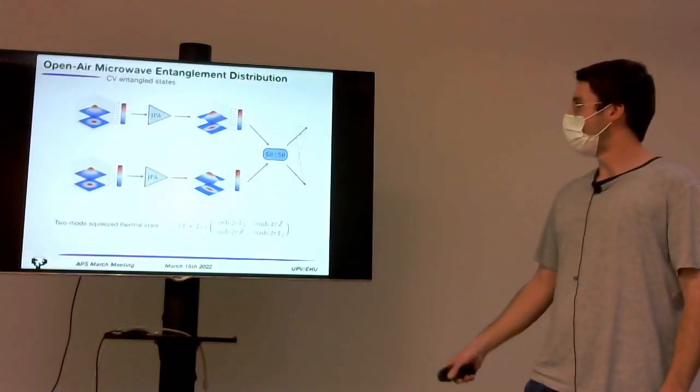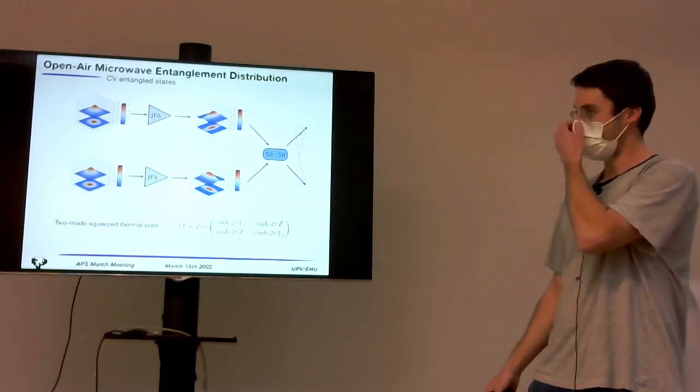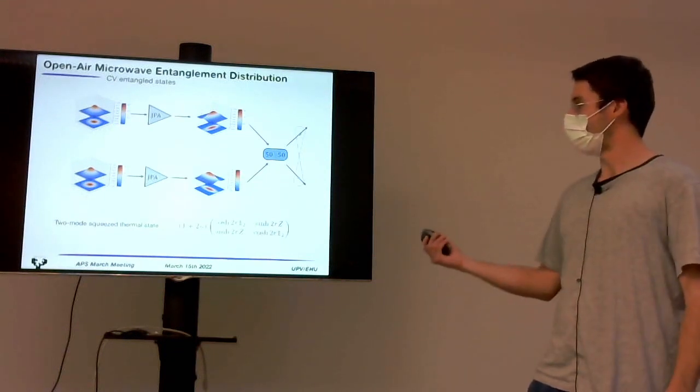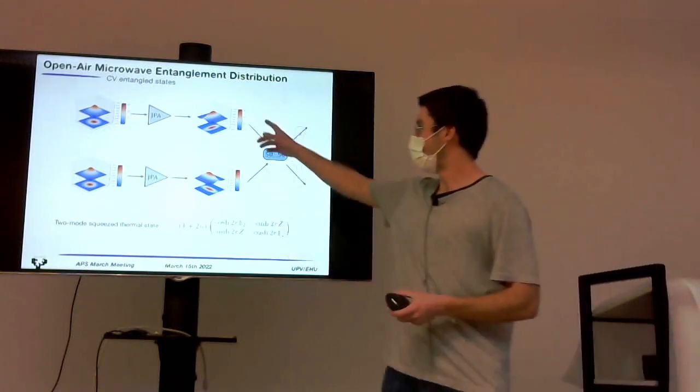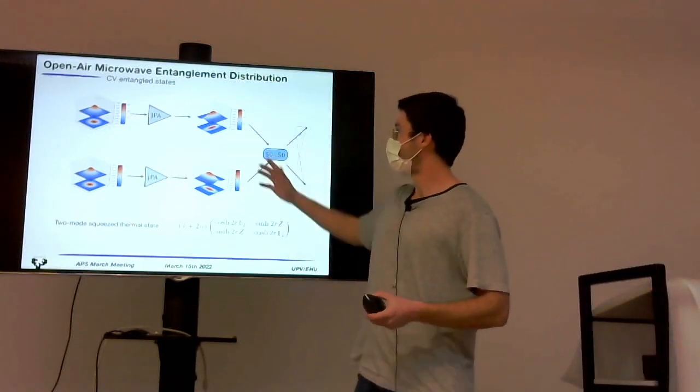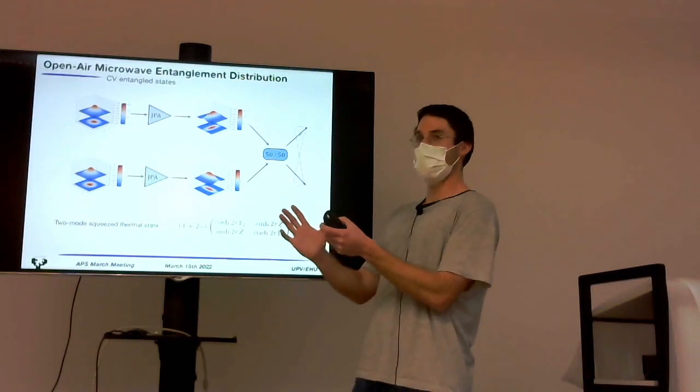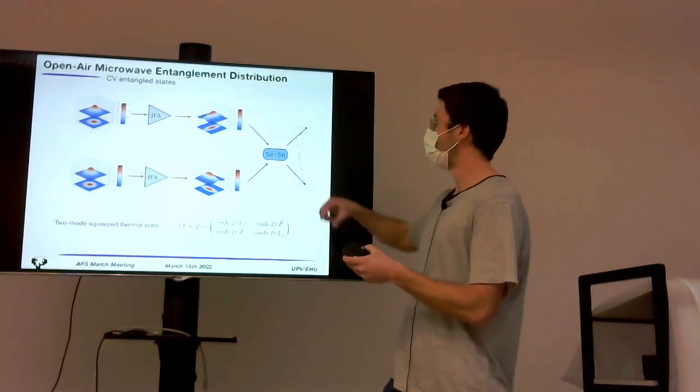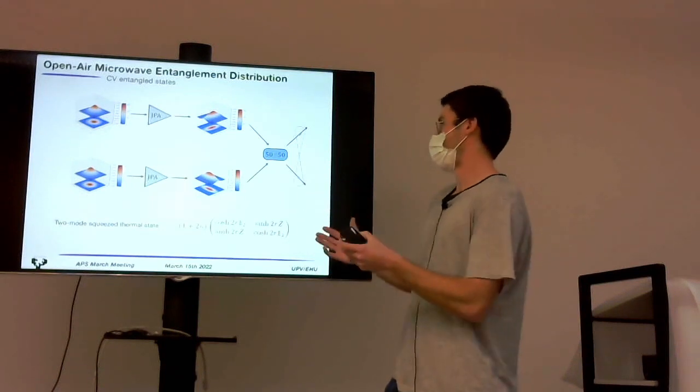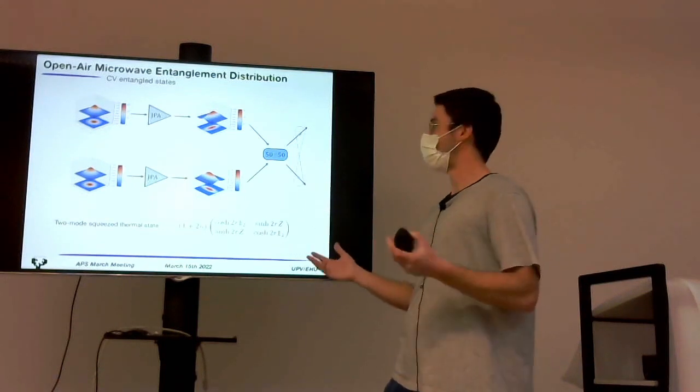So, the continuous variable entangled states that are easily produced in microwaves are called two-mode squeeze states, and they're generated from single-mode squeeze states. As you can see, there are states that have one of the quadratures squeezed below the level of vacuum fluctuations, while the other one is extended in order to preserve the uncertainty relation.